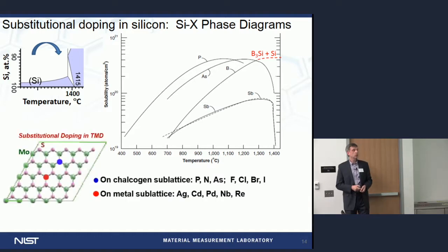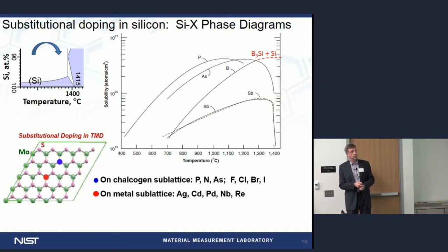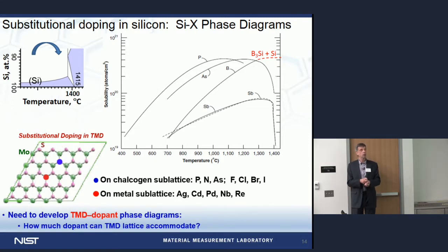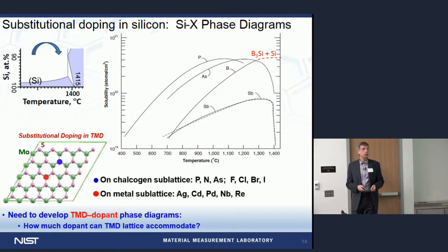Switching now to 2D materials: for substitutional doping, atoms must be placed either on the metal site for n- or p-type doping, or on the chalcogen site — phosphorus, nitrogen, or arsenic for p-type; chlorine and similar elements for n-type. Currently these phase diagrams do not exist. We need to develop partial phase diagrams to understand how much phosphorus, chlorine, or metal atoms can be incorporated into a 2D material. More dopant translates to higher conductivity or the ability to switch from n- to p-type. Phase diagrams will help map how much dopant can be introduced.